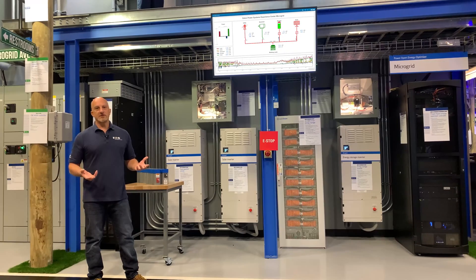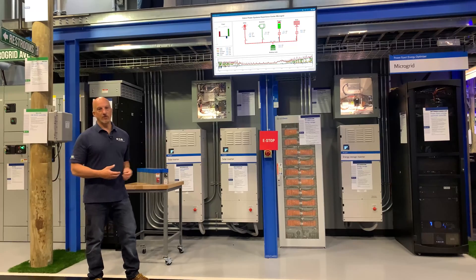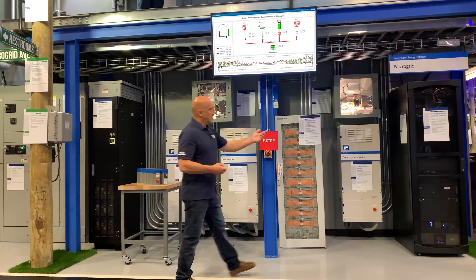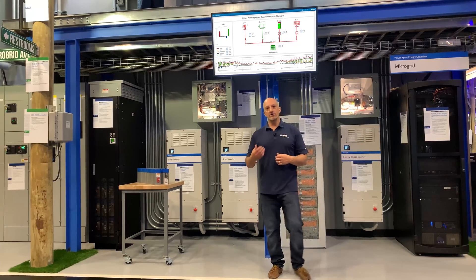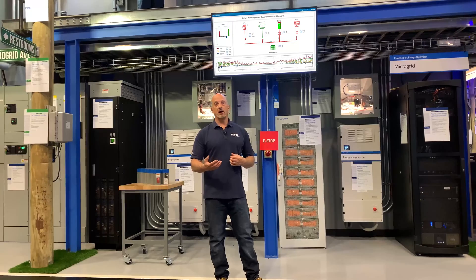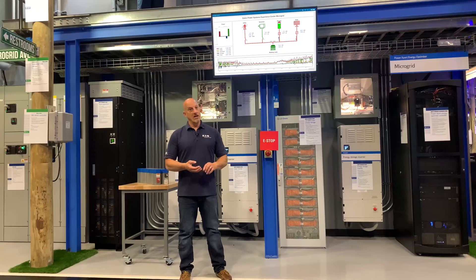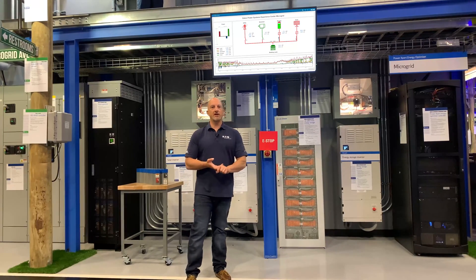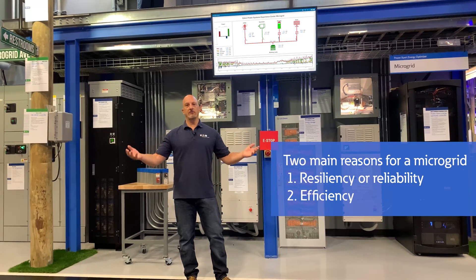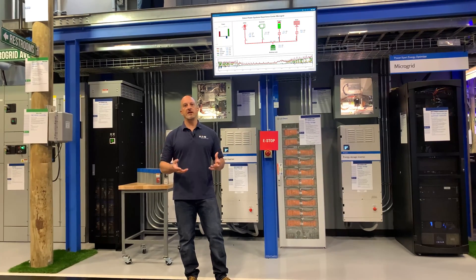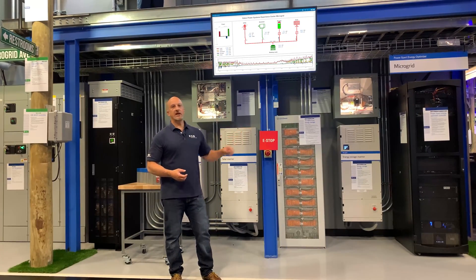This is why coming to a place like Eaton's Power Systems Experience Center lets you see all this stuff live — not just a mock-up or an emulator, but the full thing. Over here we have the controller, which is really the brains behind all of it. We use that controller to monitor what's going on and input the customer's information about what they want to optimize. With a microgrid you're optimizing around one of two things: resiliency/reliability or efficiency. A university campus looks at efficiency; a military base wants to make sure the power stays on.